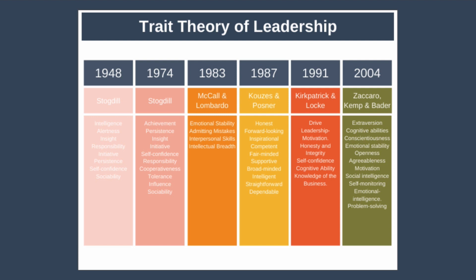From the studies Stogdill analyzed, he noted that if you combined all the traits required to be a successful leader from all the different studies, then the list became too long to be of any practical use in finding future leaders. But having said that, he did identify that the average leader is different from the average follower with regard to eight traits you can see here.